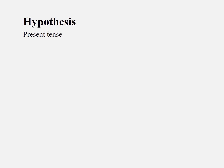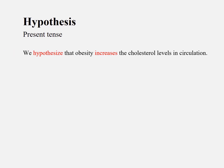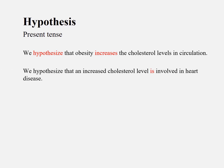When you write a hypothesis, you say 'I hypothesize' — just use the present tense. For example, 'we hypothesize that obesity increases the cholesterol levels in circulation,' or 'we hypothesize that an increased cholesterol level is involved in heart disease.' Similarly, phrases like 'we propose,' 'we believe,' or 'we disagree' all use the present tense.